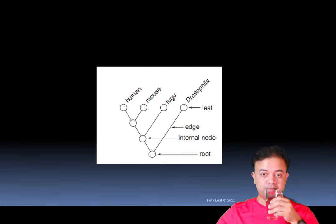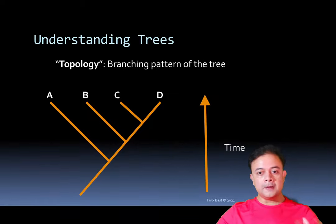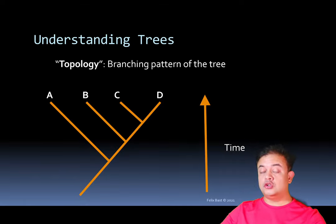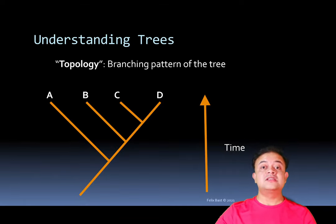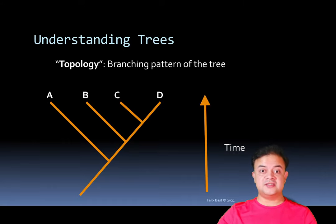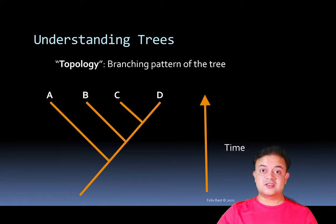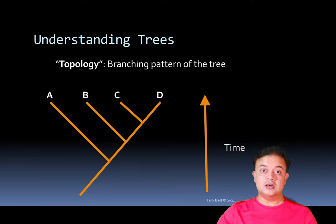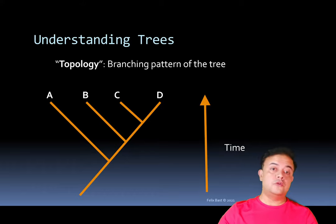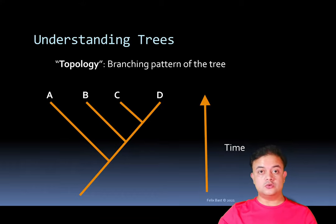The term topology means the branching pattern of the tree — how the tree branches out. The term comes from mathematics. It tells us which two leaves are more related: for example, C and D are a lot more related than either with B or A.